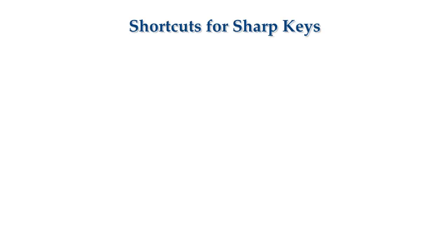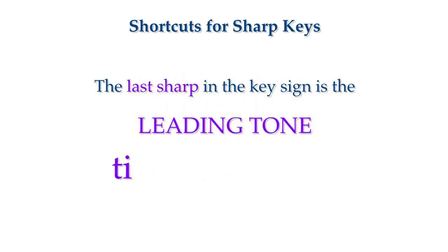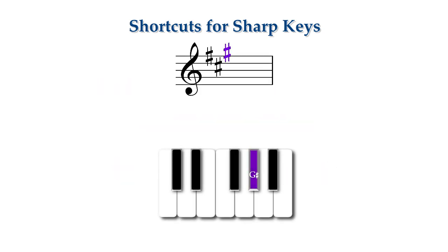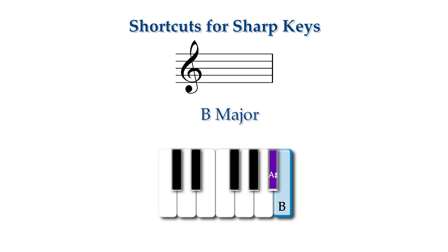These are some shortcuts for dealing with major key signatures. The last sharp in the key signature is always the leading tone. If I know the leading tone, I can find do — the next note name up one half step higher. If the last sharp is G sharp, I am in the key of A. If I am writing sharp key signatures, I write the sharps in order until I get to the leading tone. For example, to write the key signature for B major, I know the leading tone is the next note name down one half step below B, which is A sharp. So I write the sharps in order and stop on A sharp: F sharp, C sharp, G sharp, D sharp, A sharp — stop.